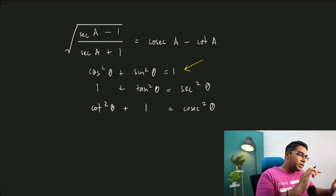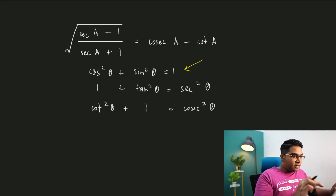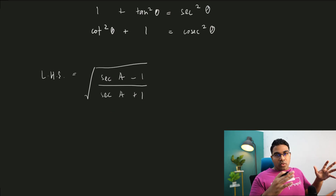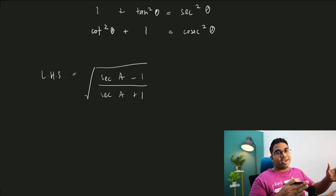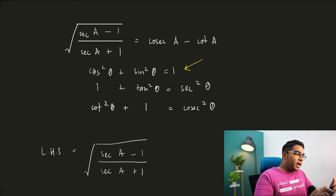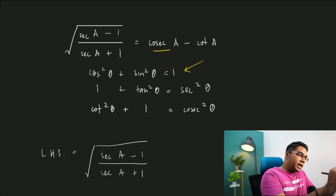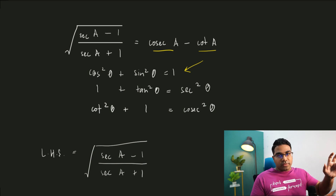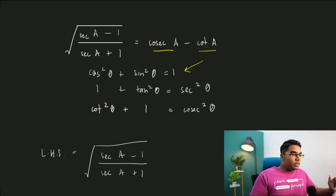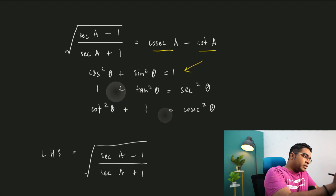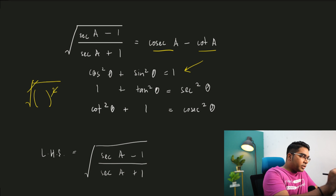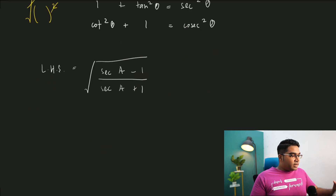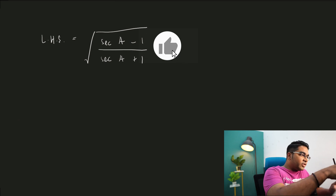So let's use this to solve the question. We're going to begin with the left hand side, keeping the end goal in mind — we need to end up with cosecant a minus cotangent a. The first thing you'll notice is there is no square root in the right hand side expression, so we need to remove the square root. To eliminate a square root, we need to have the square root of something squared. Our goal is to create something squared inside.